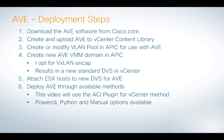After that, we create a new VMM domain in APIC specific to AVE. I could use VLAN or VXLAN encapsulation — I strongly prefer VXLAN myself, but the choice is yours. Once we create that VMM domain, a new VMware standard DVS will pop up in your vCenter environment. That's the DVS we're going to attach our AVE to. Now that this new DVS is pushed into vCenter, we attach any ESX hosts we want to participate — all standard VMware operations you must be familiar with.